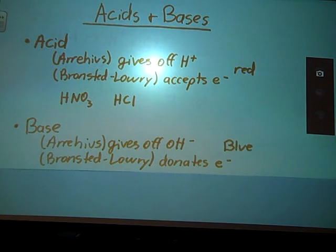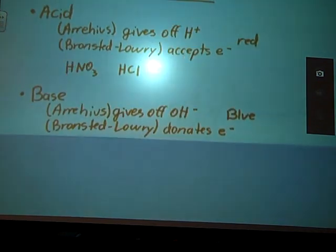Acids, or excuse me, bases generally are blue. So, on your pH scale or your pOH scale, you're looking for that blue color. Again, red litmus paper will turn blue in the presence of a base. Your universal indicators will also turn blue in the presence of a base.